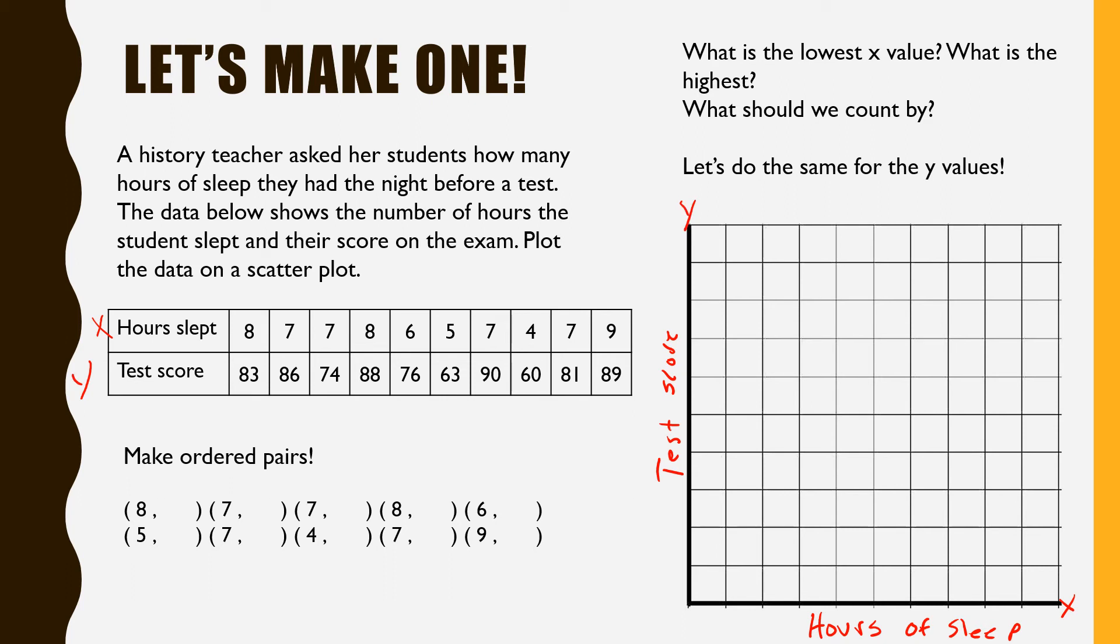First, look at your lowest x and your highest x. My lowest x is a four. My highest is a nine. So I count by ones. One, two, three, four, five, six, seven, eight, nine. That would be plenty.